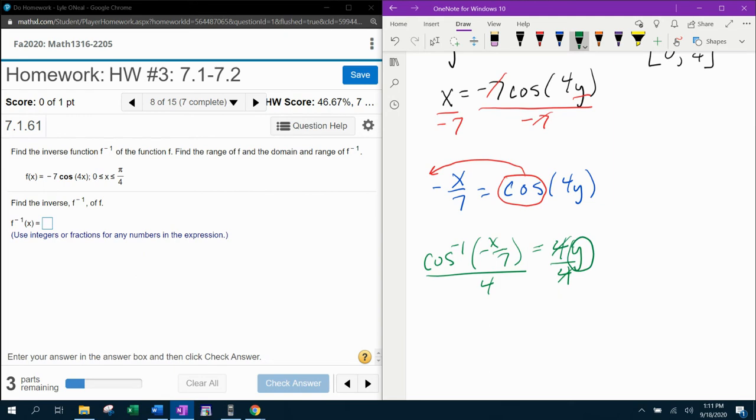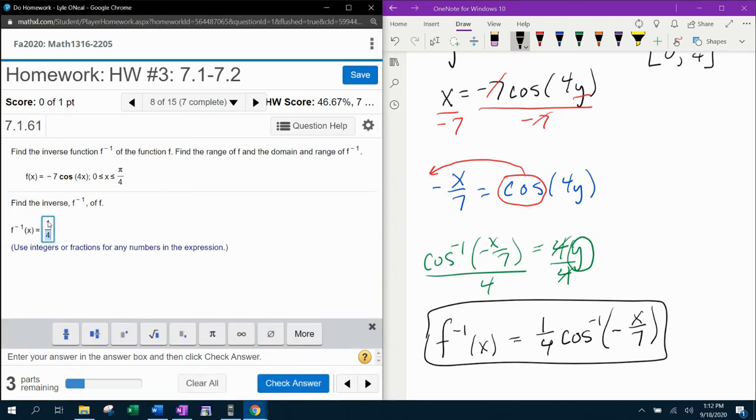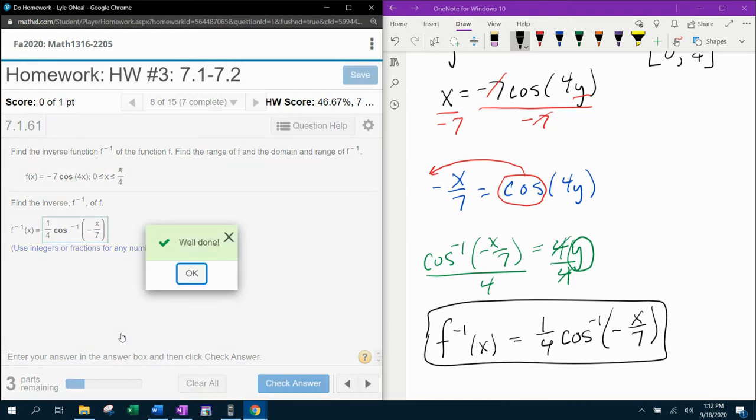And that'll get these 4s to cancel. So notice now the y is by itself. And so at this point, we now have the inverse function. f inverse is going to be one-fourth inverse cosine of negative x over 7. So there is my inverse function. And let's see if we can input that and check it for accuracy. One-fourth inverse cosine, how do I do inverse cosine? Let's do cos and then to the minus 1, parentheses, negative x over 7. And fingers crossed. Yeah, all right.